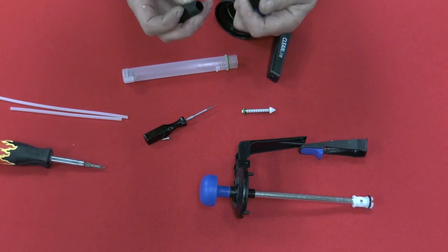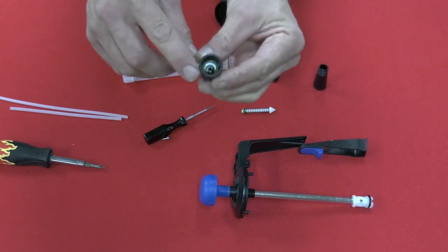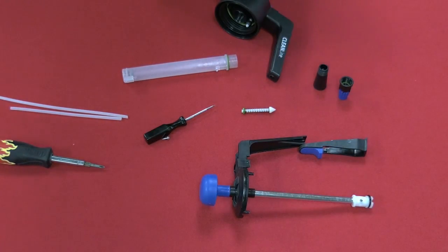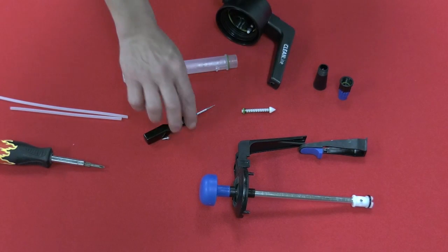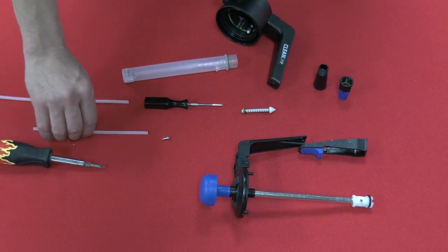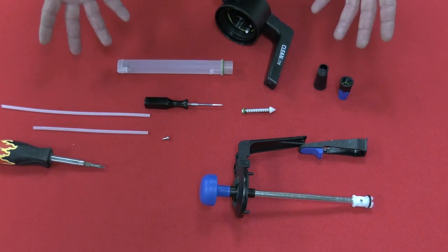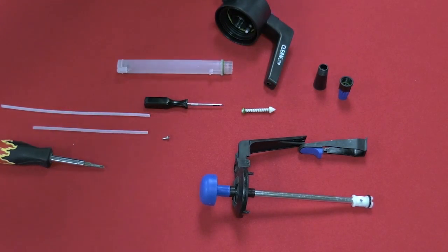Once we pull this tip off, there's also a rubber gasket in all the tips. And that's it. Your Clean Line hand sprayer is completely disassembled.